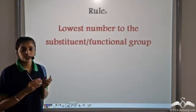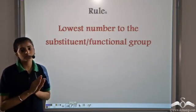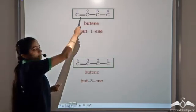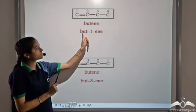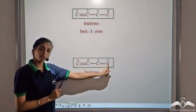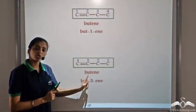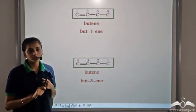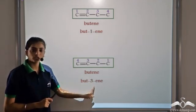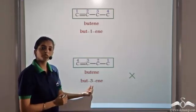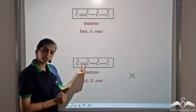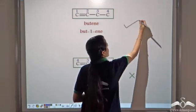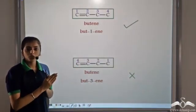The rule remains the same: we have to give the lowest number to the substituent or the functional group. In the case of butene, we can number it in two ways. Starting from the left gives but-1-ene; starting from the right gives but-3-ene. By the rule that we give the lowest number to the functional group, but-3-ene is wrong. The functional group should be given number 1, not number 3. So we always give the lowest number to the functional group.